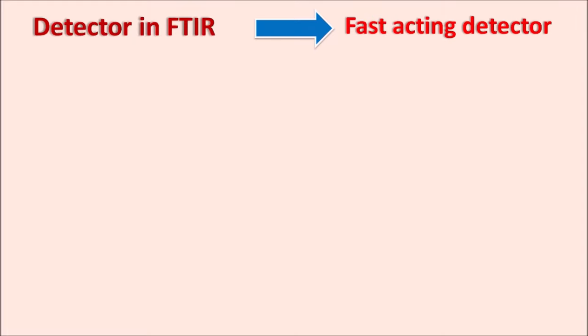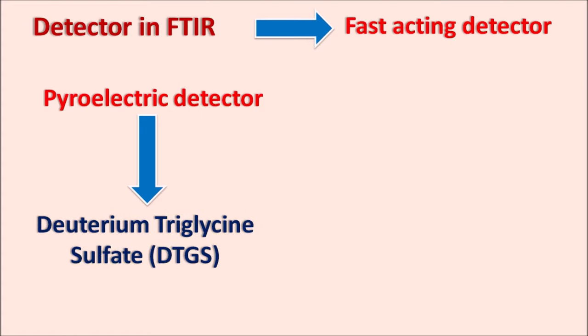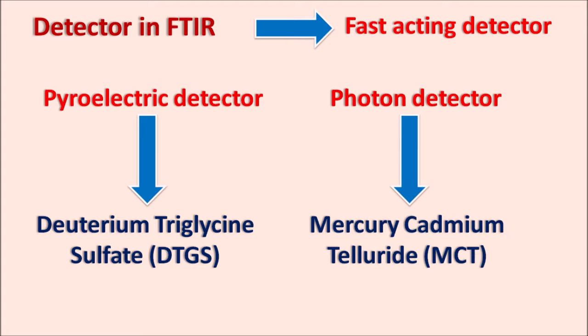For the detector in FTIR: since FTIR is highly accurate, precise, and fast, a fast-acting detector with low response time must be selected. Commonly used are pyroelectric detectors made of deuterium triglycine sulfate (DTGS), or photon detectors using a semiconductor filled with mercury cadmium telluride (MCT). Both detectors have a fast response and are therefore suitable for use in FTIR.